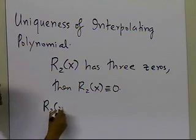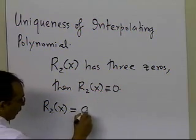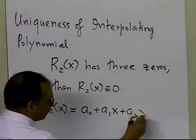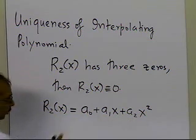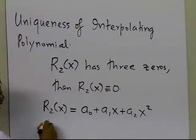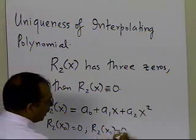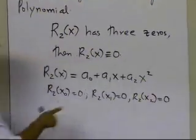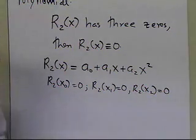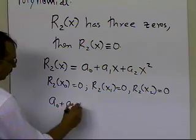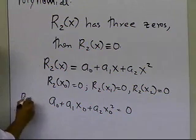If you have a second-order polynomial and it has three zeroes, then R2 of x is identically equal to zero. Let's assume R2 of x to be a second-order polynomial. It has three zeroes at x0, x1, and x2. So R2(x0) is zero, R2(x1) is zero, and R2(x2) is zero. Writing the first equation: a0 plus a1·x0 plus a2·x0² equals zero, because R2(x0) = 0.